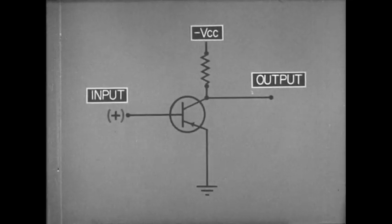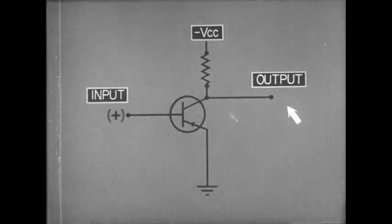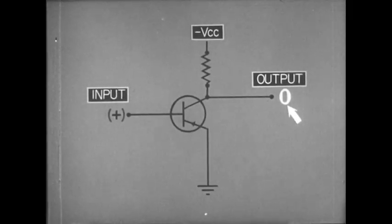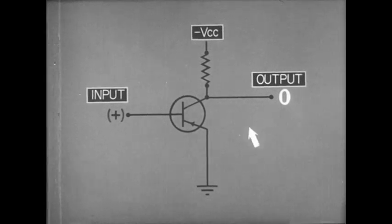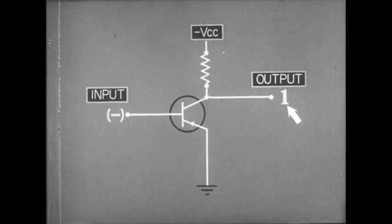In a digital computer, one circuit condition is used to represent the digit zero, and the other condition, the digit one.